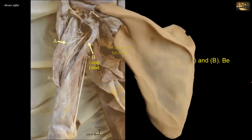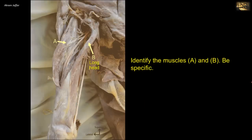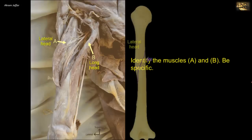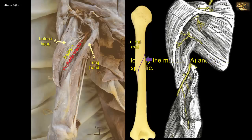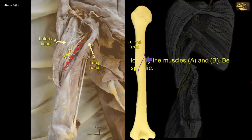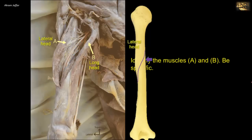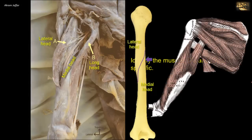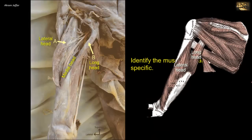The long head arises from the infraglenoid tubercle of the scapula, outside the capsule of the shoulder joint. The lateral head arises from the posterior surface of the humerus, superior and lateral to the radial groove. You can see the radial groove here, occupied by the radial nerve and profunda brachii artery. The third head is the medial head that is attached to the posterior surface of the humerus, inferior and medial to the radial groove. It is not clearly shown because it is overlaid by the superficial part of the muscle. It might help to understand the relations of the heads to consider a superficial part of the muscle formed by the long and lateral heads that lie side by side.